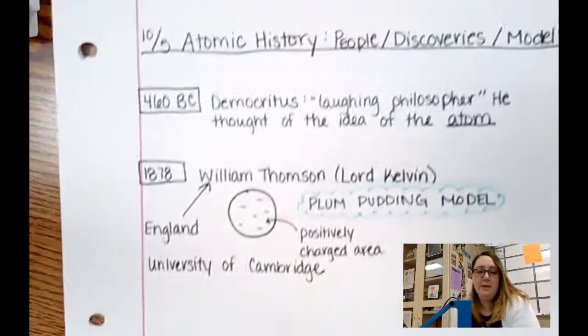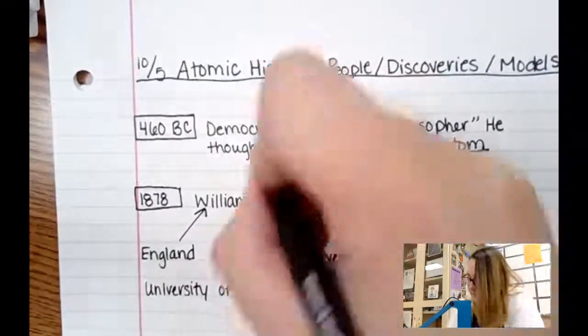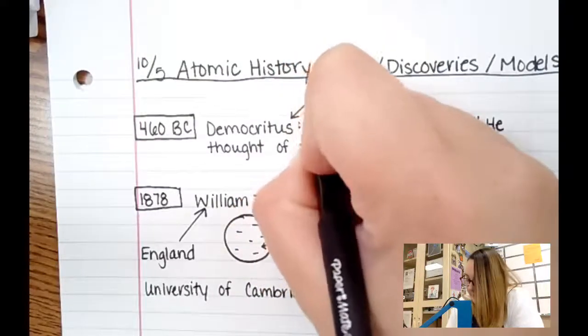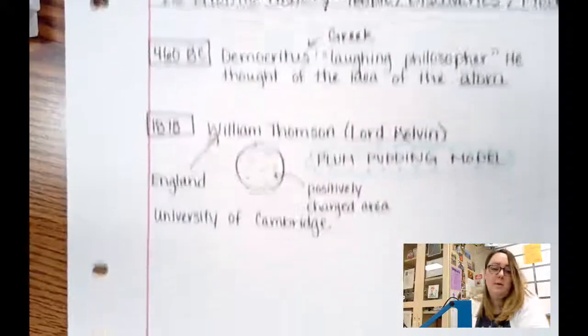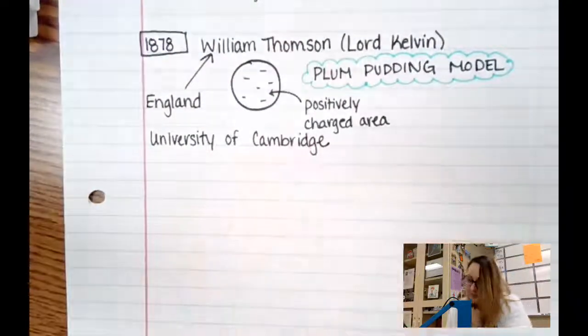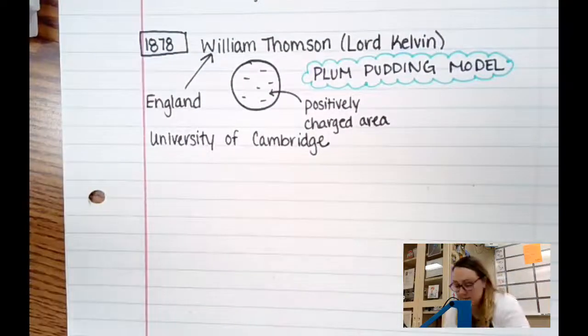He did a lot of his studies and research at the University of Cambridge. And I just remembered we didn't put where Democritus, he is Greek happening over in Greece. This theme of University of Cambridge is just going to keep repeating itself.